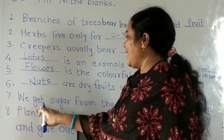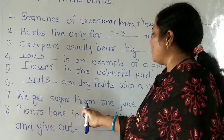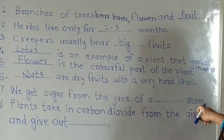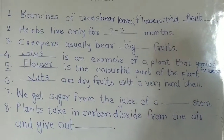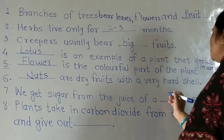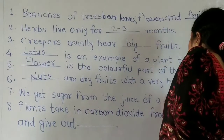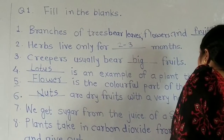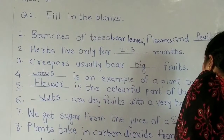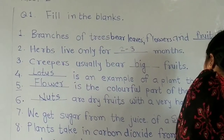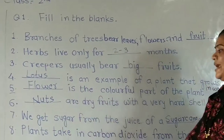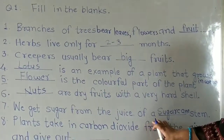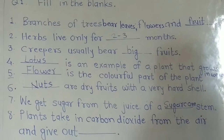Number 7: We get sugar from the juice of a dash dash stem. The answer is sugar cane. We get sugar from the juice of a sugar cane stem.